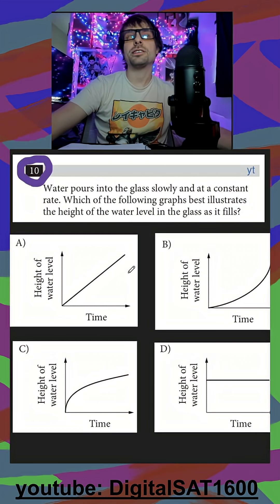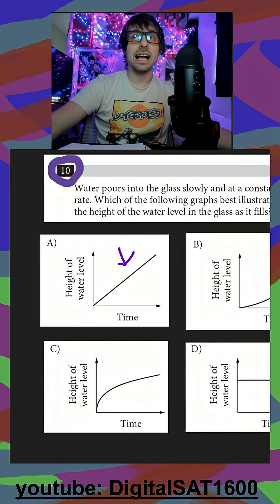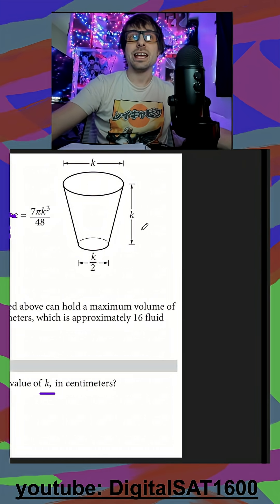So you might think because the pouring is constant, well, then it's going to look like this, right? But our glass is not constant. It's going to fill up faster at the start than it is at the end.